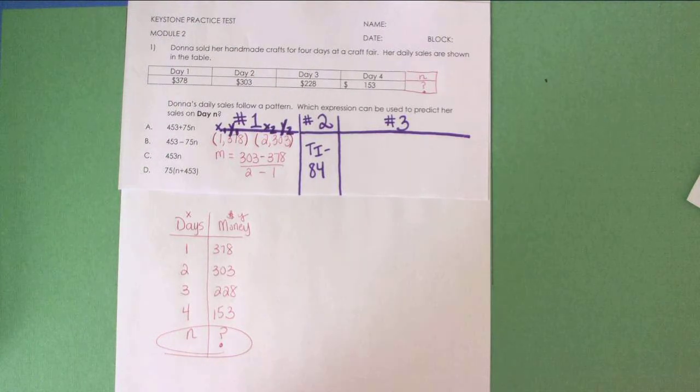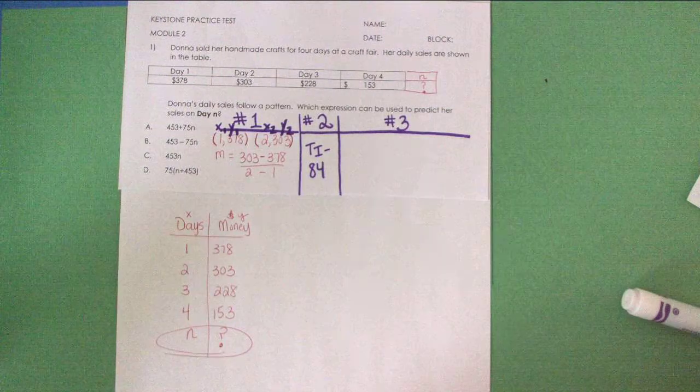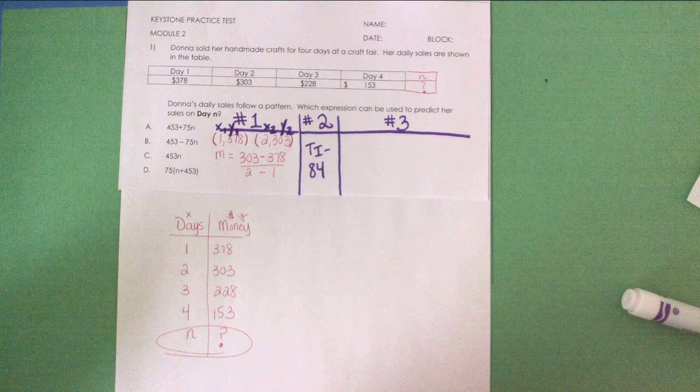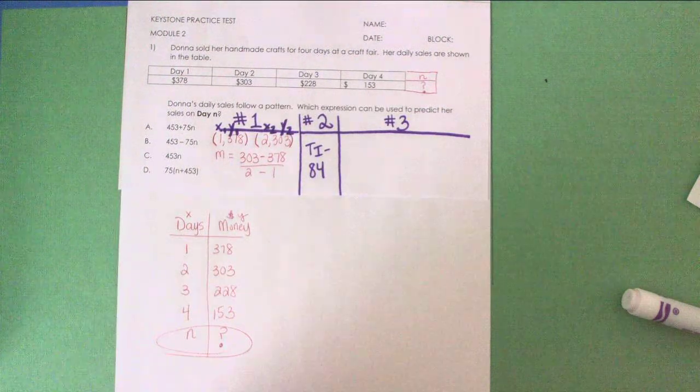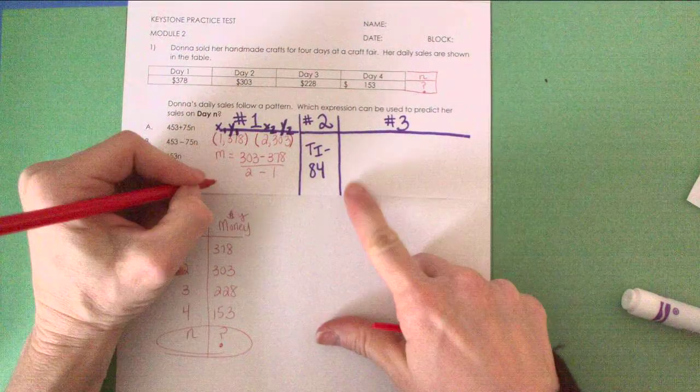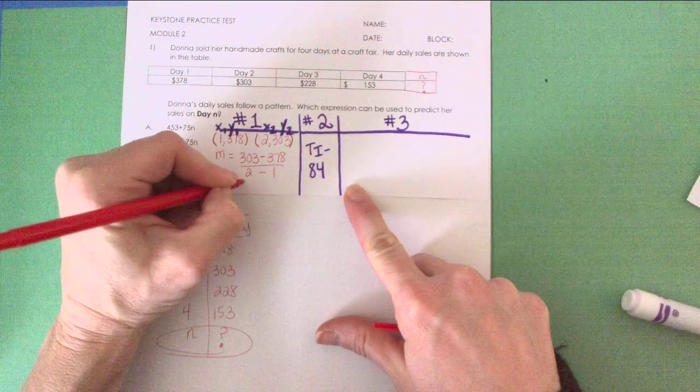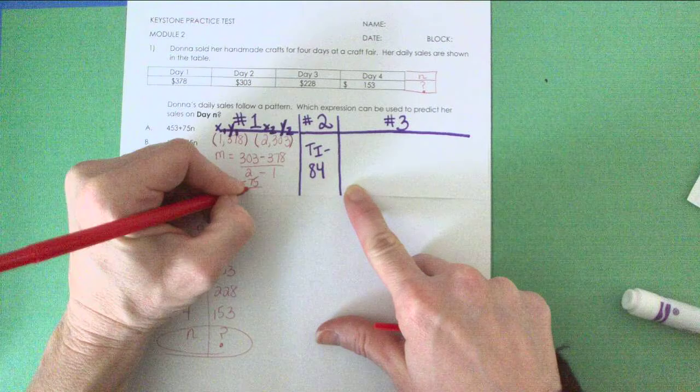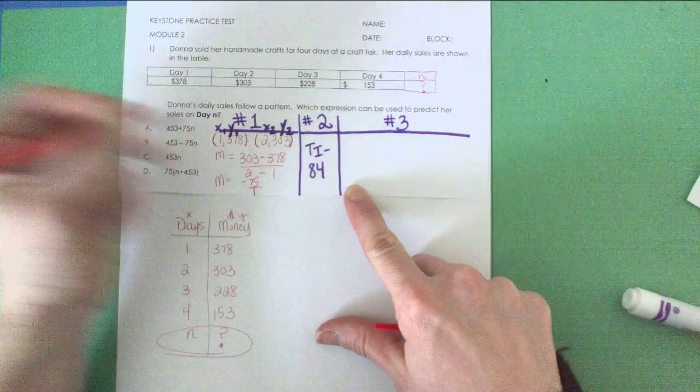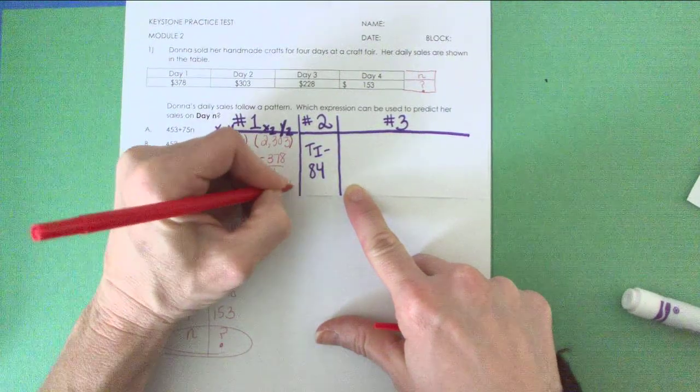So if I do this math, if I take 303 minus 378, I end up getting that my slope is negative 75 over 2 minus 1 is 1. So my slope is going to be negative 75.